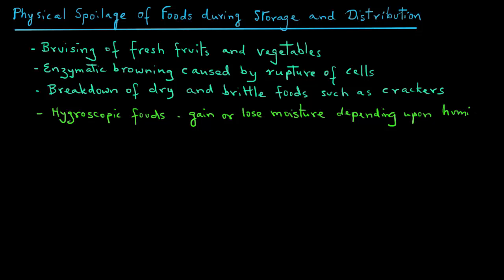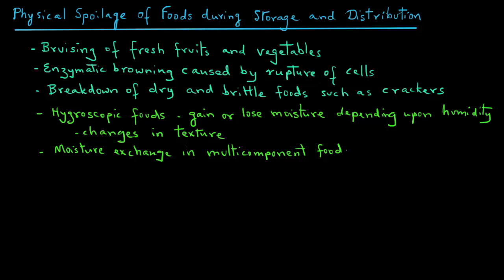Most food products are hygroscopic in nature, meaning they gain or lose moisture depending on the humidity levels in the surrounding environment. A typical influence of moisture exchange causes changes in texture. For example, dried foods such as crackers may lose their crunchiness and become soggy upon gaining moisture, whereas soft textured foods with desirable chewy attributes become hard and brittle. Moisture exchange may also occur in multi-component foods depending on differences in water activity.